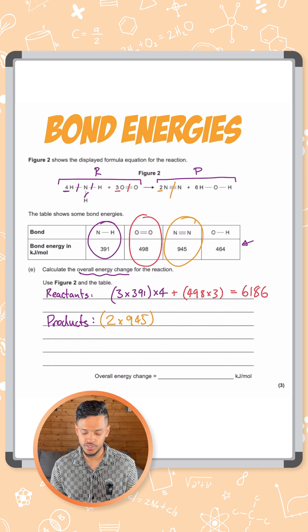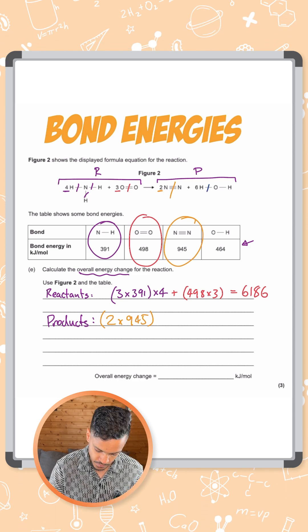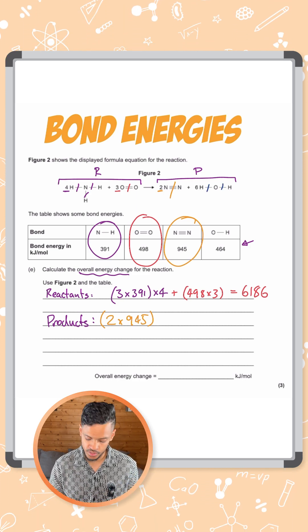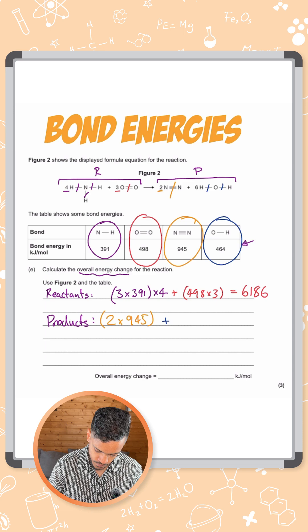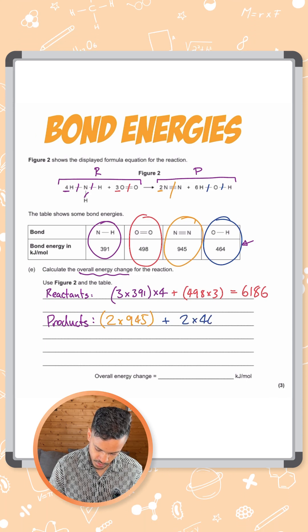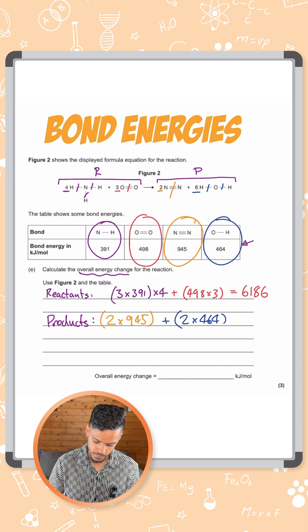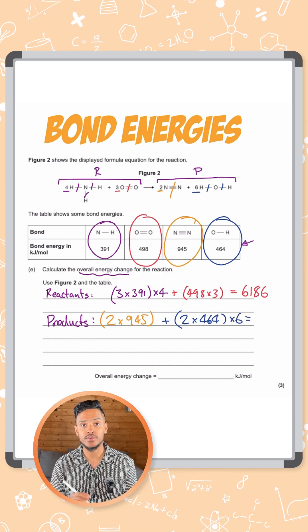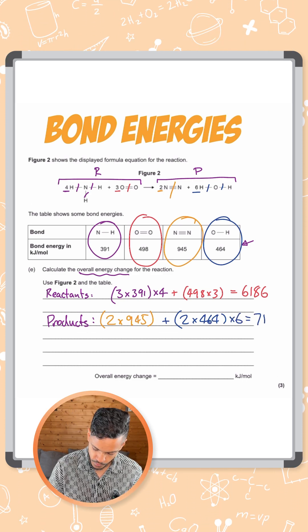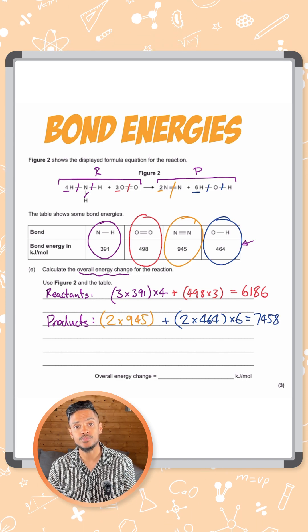And finally we've got OHs here. Let's count these carefully. We've got two lots of OHs. So that's going to be two times 464. But we have a big six in front. So we need to multiply that whole thing by six. All of that gives you an answer of 7458 kilojoules per mole.